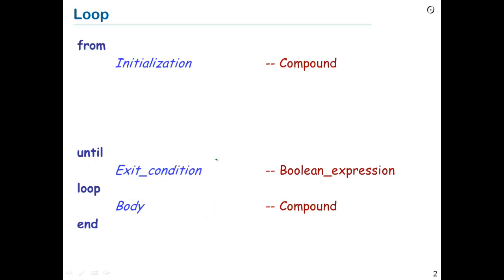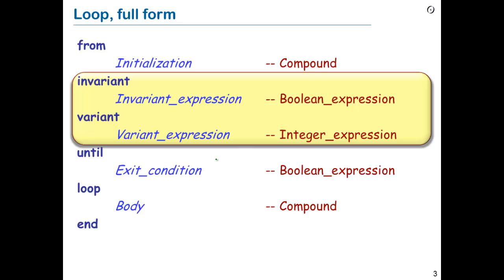This is not all there is to the syntax of a loop, even in the basic form. We have two other possible clauses: invariant and variant, which we are going to study in subsequent sub-lectures. Roughly speaking, an invariant is a property that is going to be true after initialization and preserved by every iteration of the body, so that it's still true at the end. A variant is what is going to help us determine that the loop actually terminates. These clauses are optional, so in the examples of this first sub-lecture, we are not going to use them yet.